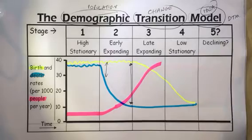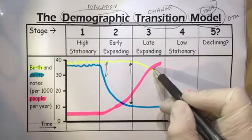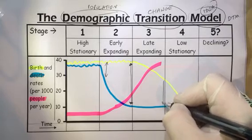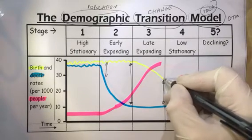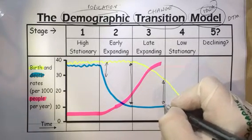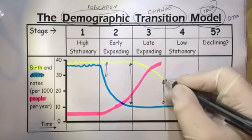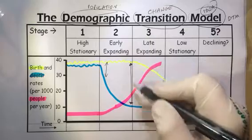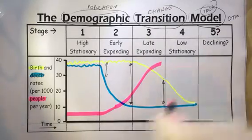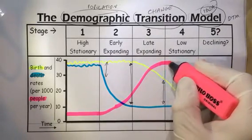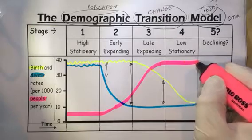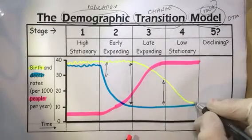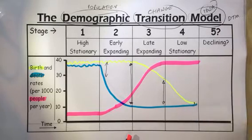In stage three, the population is still increasing but the rate of increase is not as high. The birth rate is above the death rate, so overall there are more births than deaths, but the gap isn't as large as it is in stage two. Overall, total population continues to rise, and by stage four there's almost no gap at all between birth rate and death rate — that's possibly where the UK is at the moment.